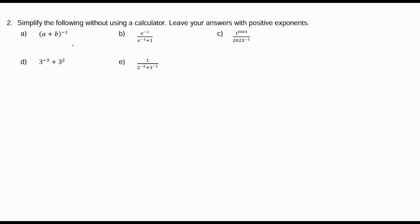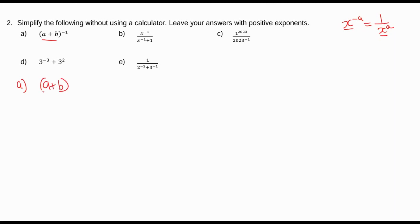Let's continue with questions that involve exponential laws and exponential definitions. Simplify the following without using a calculator; leave your answers with positive exponents. For part a, we're going to use the definition which says x to the power negative a is equal to 1 over x to the power a. The whole bracket is the base, so (a plus b) to the power negative 1 is equal to 1 over (a plus b).